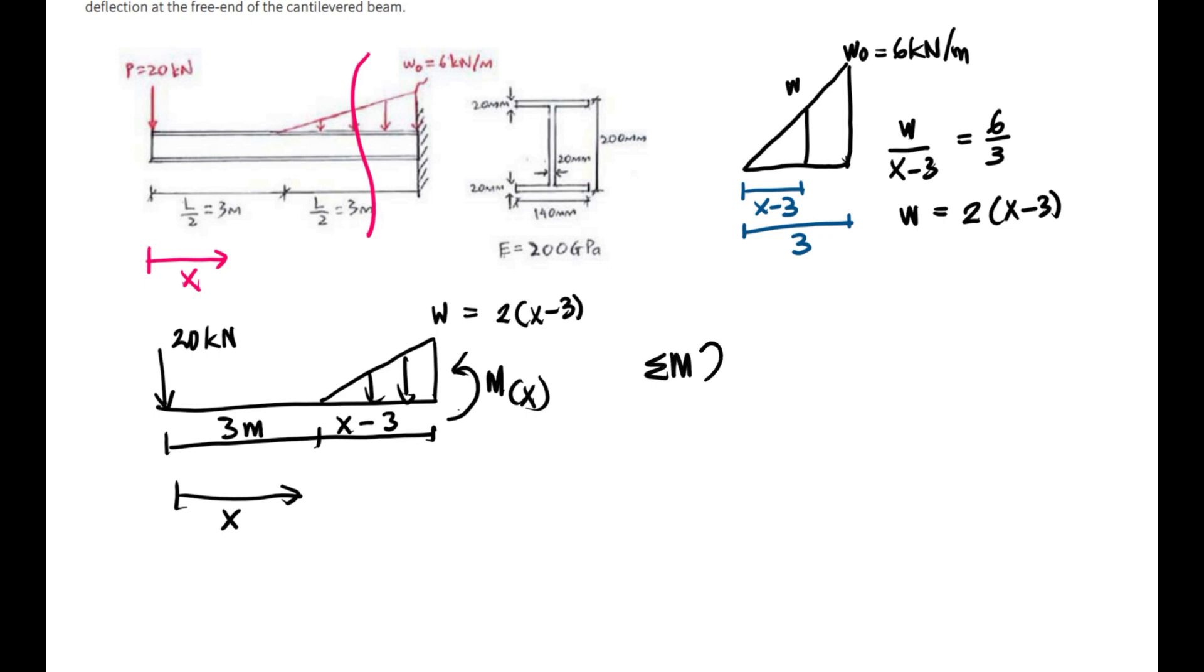So we can start with sum of moments equal to zero. Here we can start at W. So from here to here, we can start with x minus 3 times 2(x minus 3) times with the lever arm one-third times x minus 3 equal to 0.